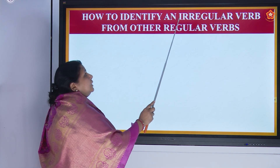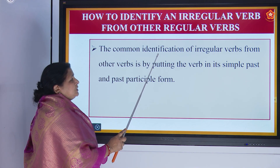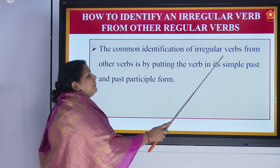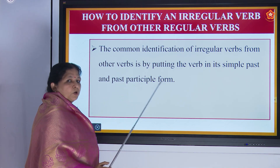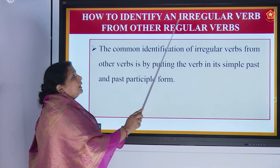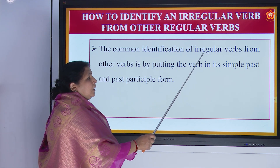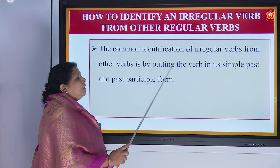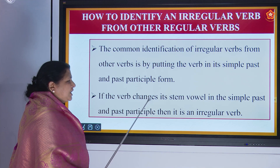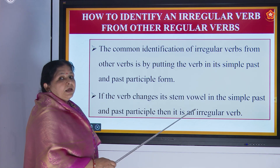Now, how to identify an irregular verb from other regular verbs? The common identification of irregular verbs is by putting the verb in its simple past and past participle form. If the verb changes its stem vowel in the simple past and past participle, then it is an irregular verb.